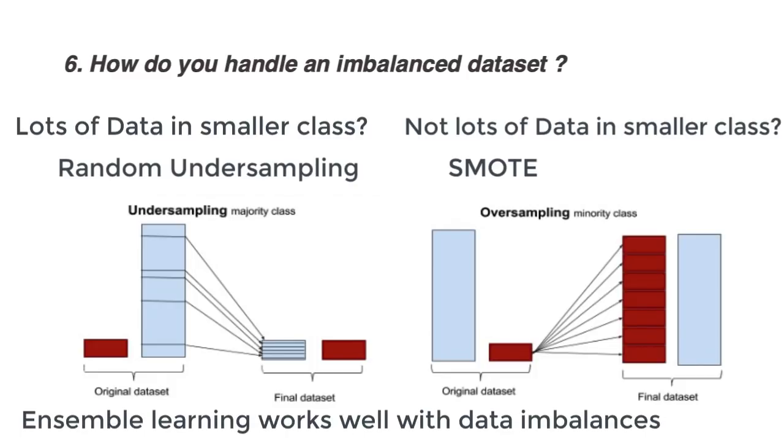Ensemble learning algorithms tend to work well for data imbalances, typically boosting, bagging, and random forest techniques. Why? Aggregation tends to mitigate overfitting of a specific class.